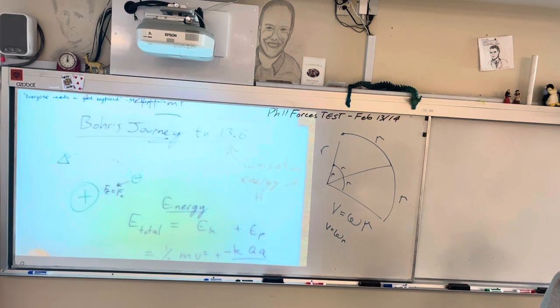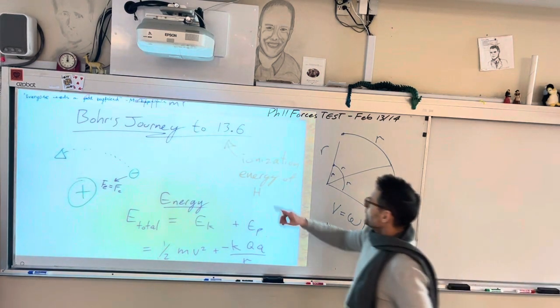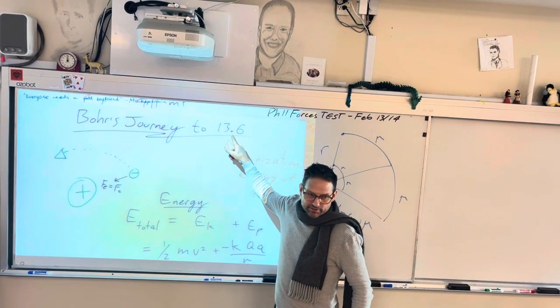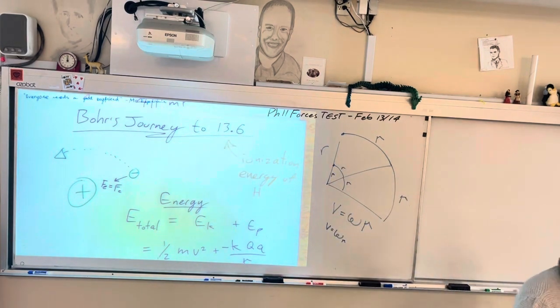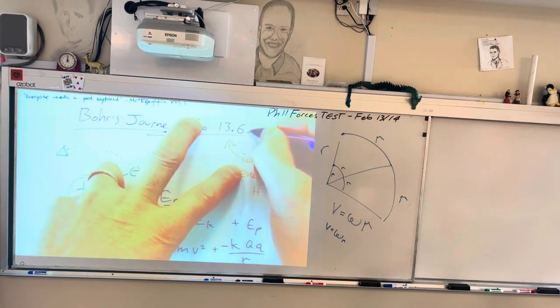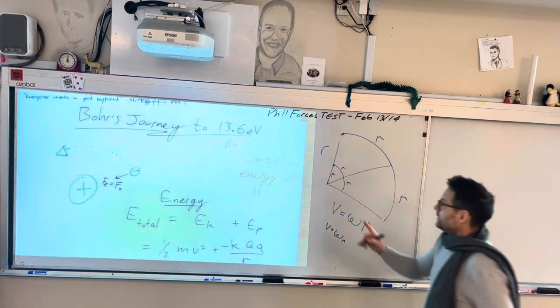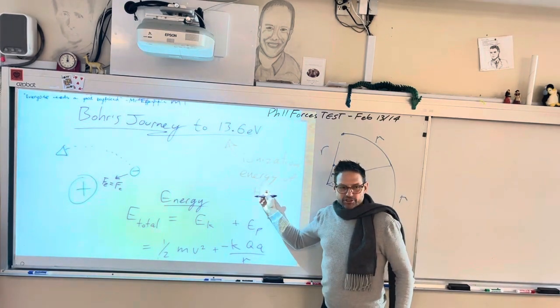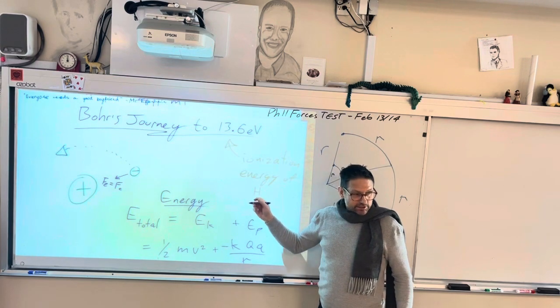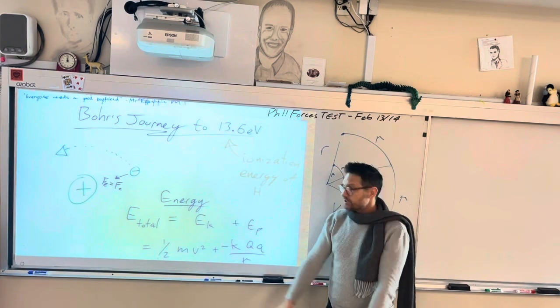Quick recap. This is Bohr's journey to 13.6 eV. I'm going to put EV in the title too. So this is electron volts. That is the ionization energy of hydrogen, which people had seen based on emission spectrum and things.